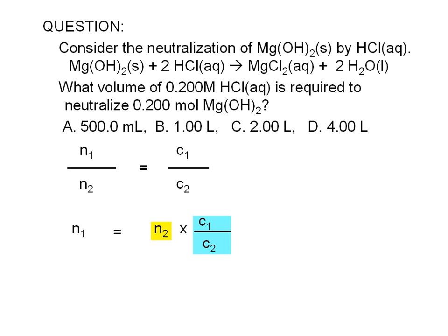Let's see how we can apply this equation to the question we are working on. We assign our known moles to n2. Since we are given that 0.200 moles of magnesium hydroxide are to be neutralized, we assign this to n2.